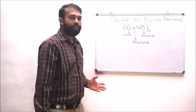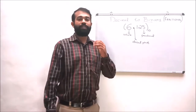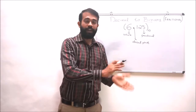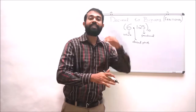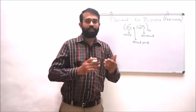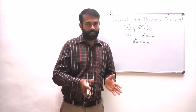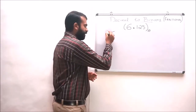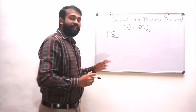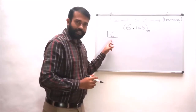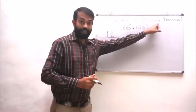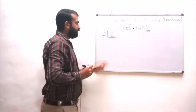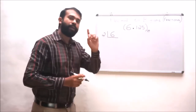When converting a decimal fractional number into its binary equivalent, we have to consider the whole number portion and the fractional portion separately, as these two conversions are entirely different. For the whole number portion, which is 6, we continuously divide by the base of the binary number, which is 2.